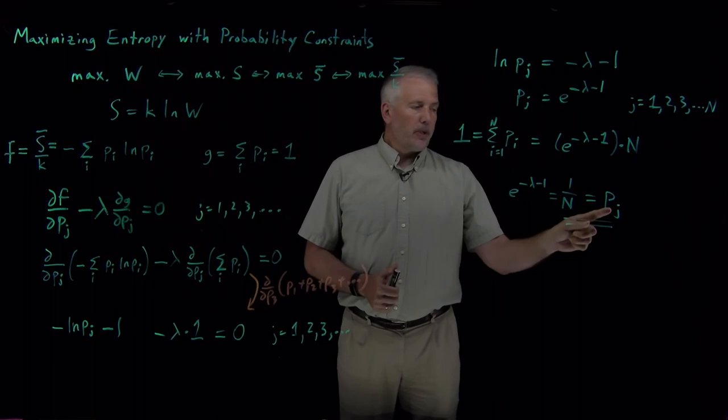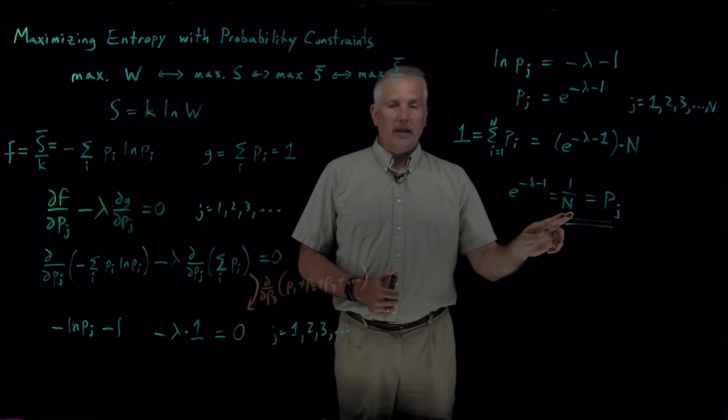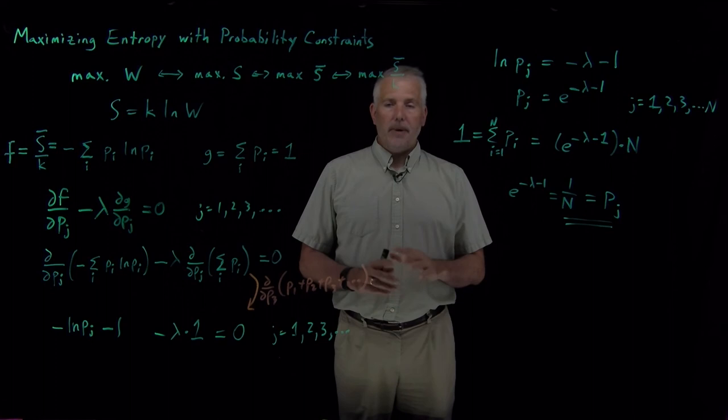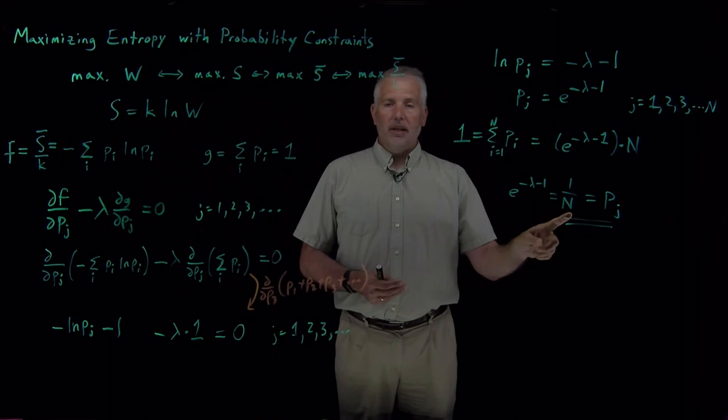And for example, for the coin flip example, if I have two possibilities, heads or tails, the maximum entropy comes when heads happens one half the time and tails happens one half the time. If I were to roll a six-sided die, what's most likely, what maximizes the entropy?